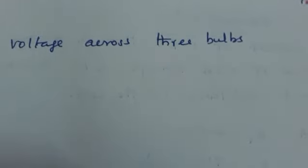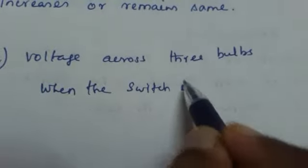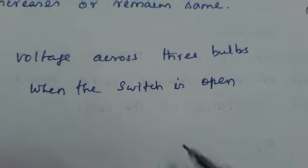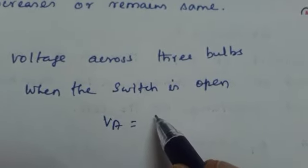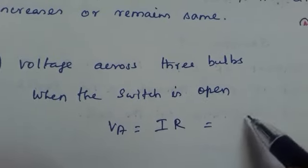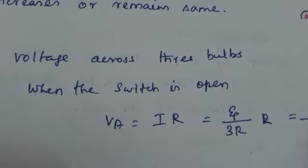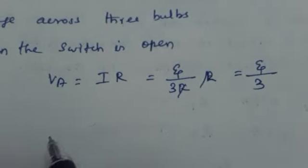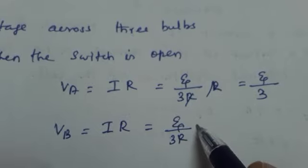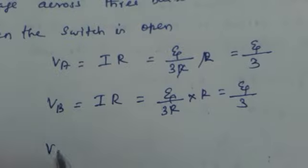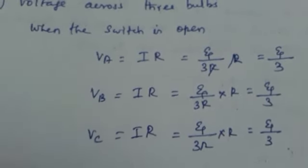For part C, we find the voltage across the three bulbs. When the switch is open, all three bulbs are in series, so the voltage across each is equal: VA = I × R = (ψ/3R) × R = ψ/3. Similarly, VB = ψ/3 and VC = ψ/3. Each bulb has a voltage of ψ/3 when the switch is open.